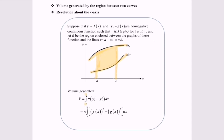If we substitute the functions, we will have V = π times the integral from a to b of [f(x)]² minus [g(x)]² with respect to x.